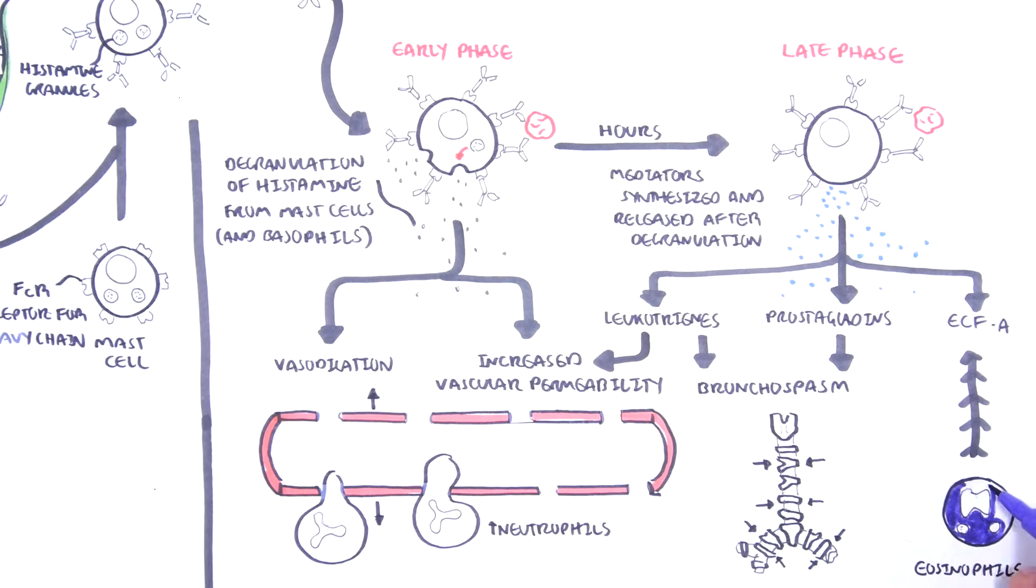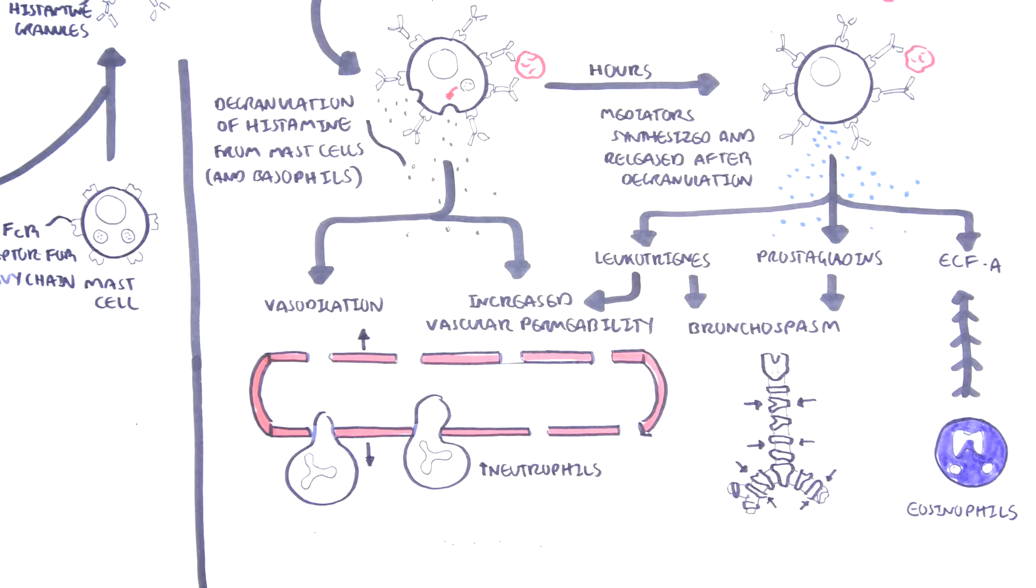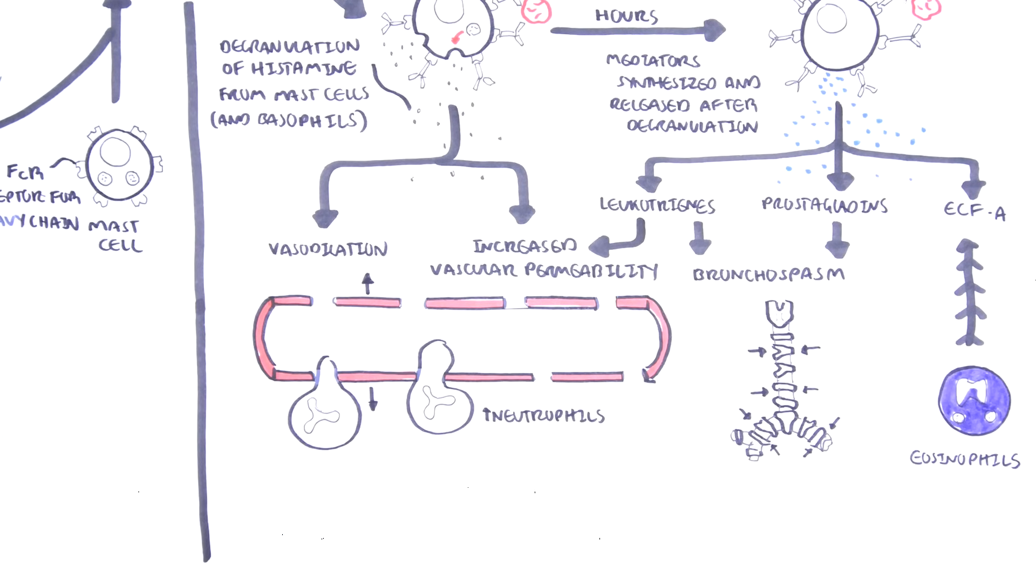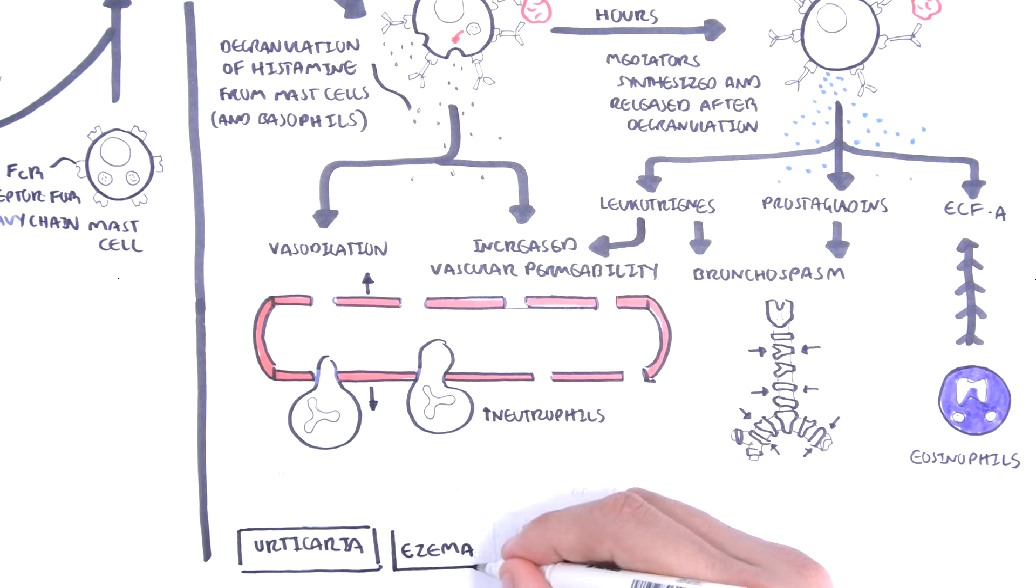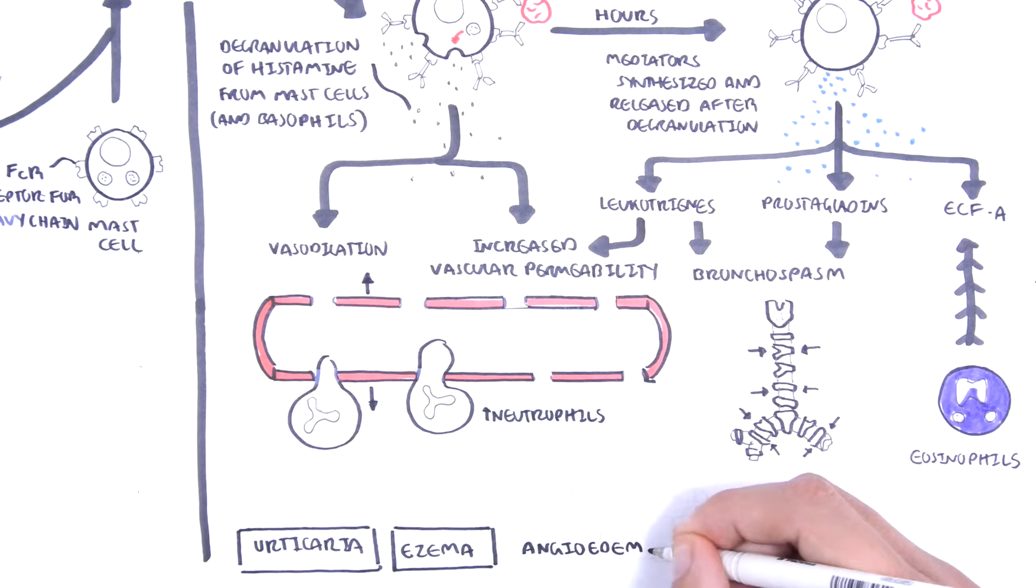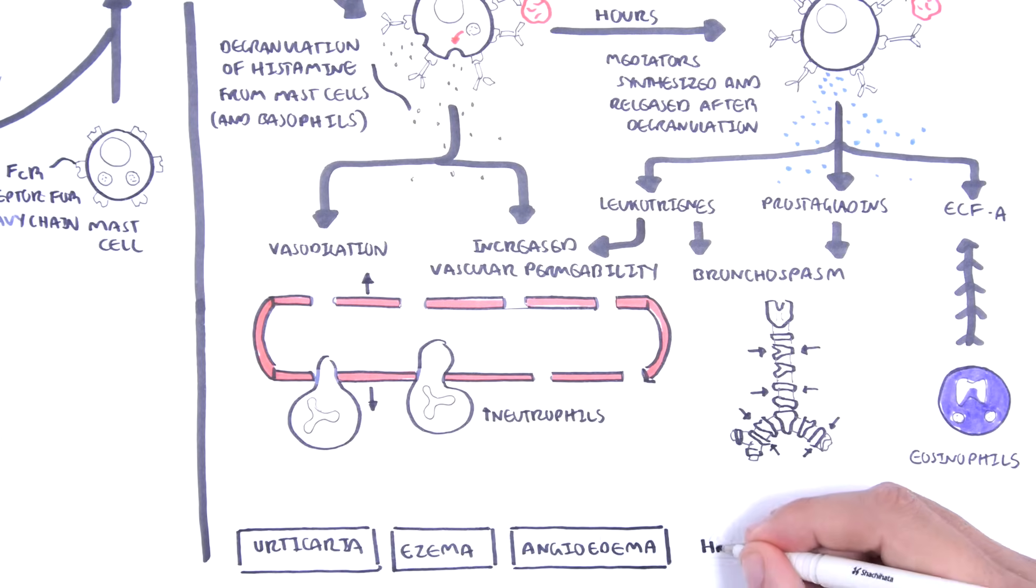All these mediators cause the variety of signs and symptoms we see in a type 1 hypersensitivity reaction, which is an allergic reaction. And this includes urticaria, eczema, angioedema, hay fever, and asthma-like symptoms.